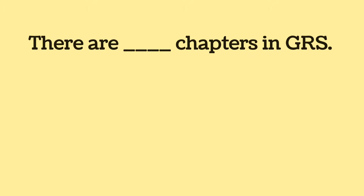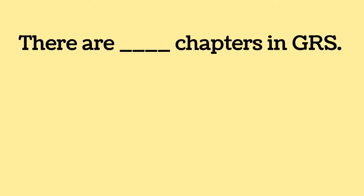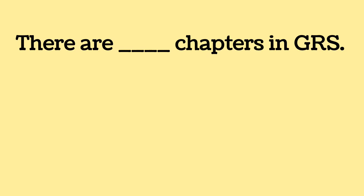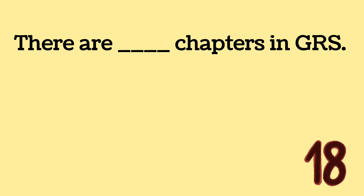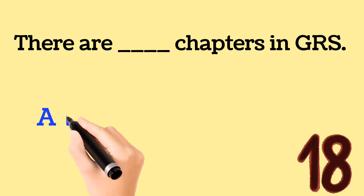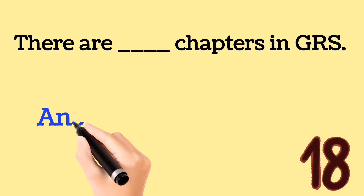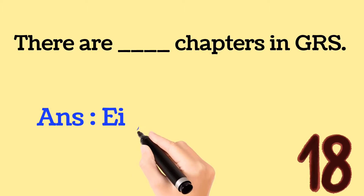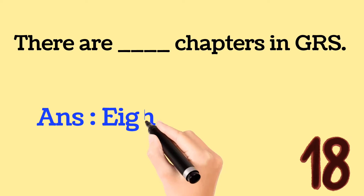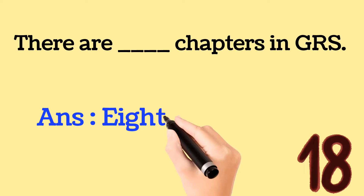Next important question: There are how many chapters in GR (General Rules)? The correct answer is 18. Total number of chapters available in GR is 18.